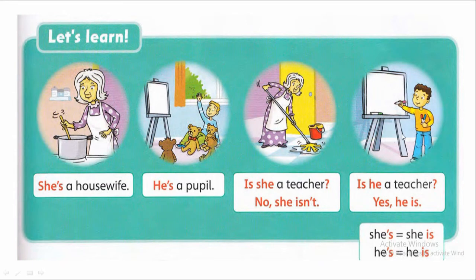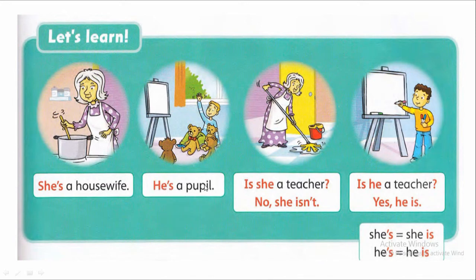And the fourth picture — look at the fourth picture. Is he a teacher? Yes, he is. Now, if we are talking to someone: she means girl — for example, she is a housewife. And he is for boy — for example, he is a pupil. She is for girl, he is for boy.